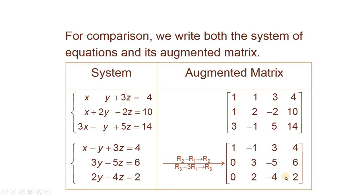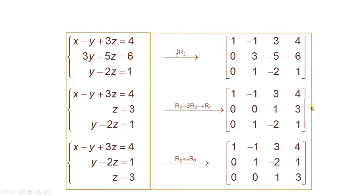Now multiplying the third row by 1 over 2. The operation 1 over 2 times R3 will bring the value here to 1, minus 2, to 1. These are the new values after applying this operation. Now we have to make this 3 equal to 0 by using R2 minus 3 times R3 — that is, multiplying this row by minus 3 and adding here. So this 3 will become 0. Multiplying minus 2 by minus 3 gives 6, and 6 minus 5 is equal to 1.